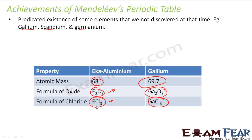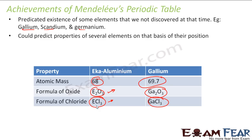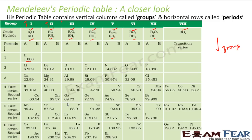He could predict properties of several elements based on their position in the table. For elements whose reactions were unknown, based on their position he could tell how they would form hydrides and oxides — because his periodic table was entirely based on oxides and hydrides.